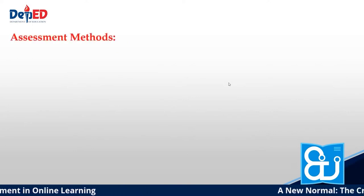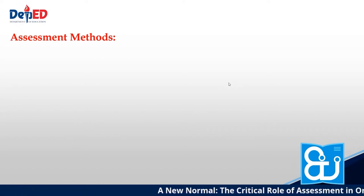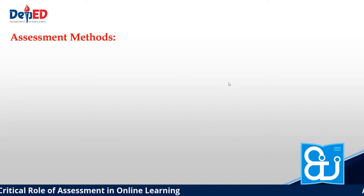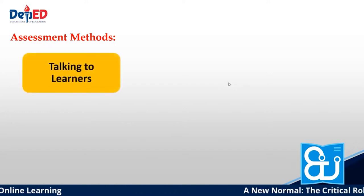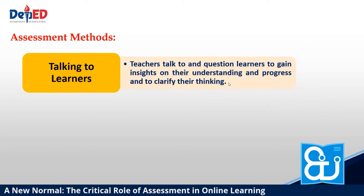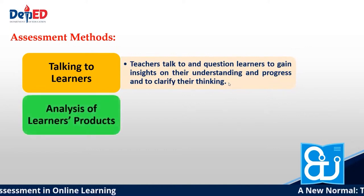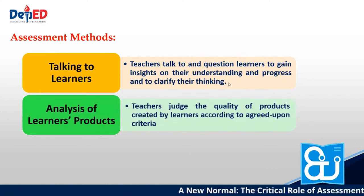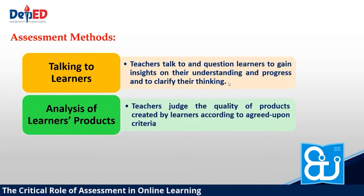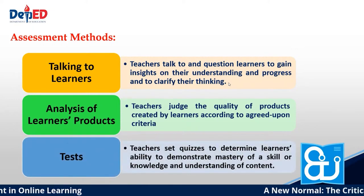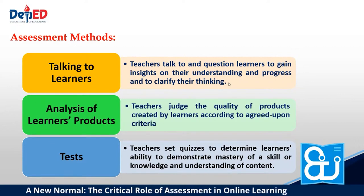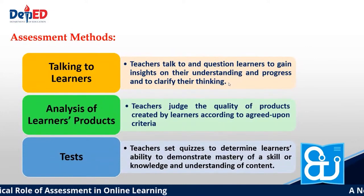Let's look at assessment methods. We have different forms. First, talking to learners—the teacher talks to and questions learners to gain insights into their understanding and progress and to clarify their thinking. Second, analysis of learners' products—teachers judge the quality of products created by learners according to agreed-upon criteria, which is the rubric we use. And third, tests—the teacher sets quizzes to determine the learner's ability to demonstrate mastery of a skill or knowledge and understanding of content. These are the assessment methods we can use.